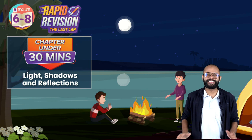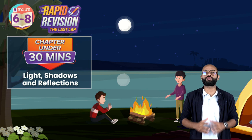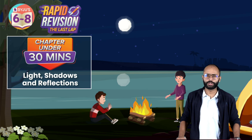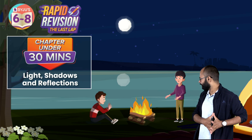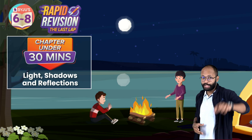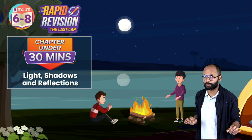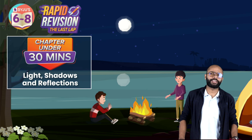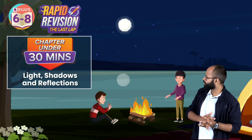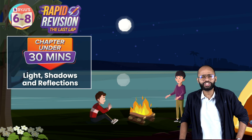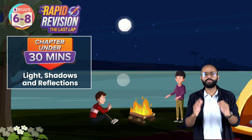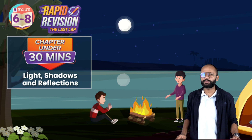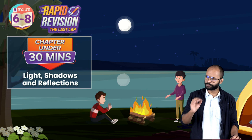Hello 6th graders, this is Baiju's 6th, 7th and 8th channel and I am Saurabh. Welcome to this very important rapid revision - the last lap. The chapter's name is Light, Shadows and Reflection. This is a series where we take care of one chapter and make sure it's completed under 30 minutes. This chapter is simple and beautiful.